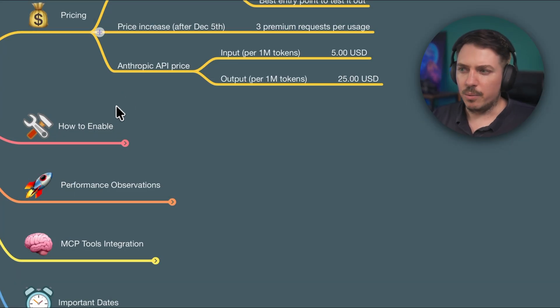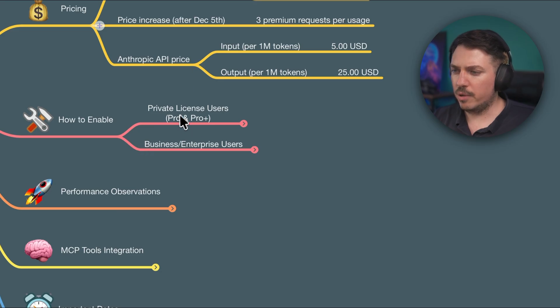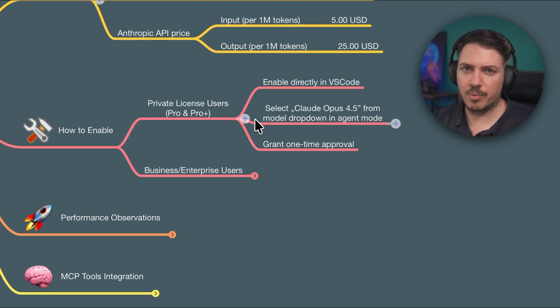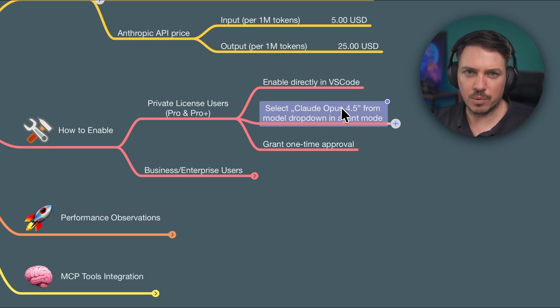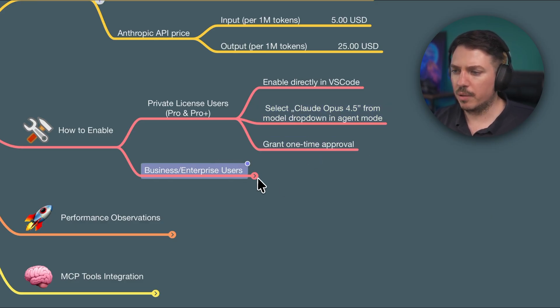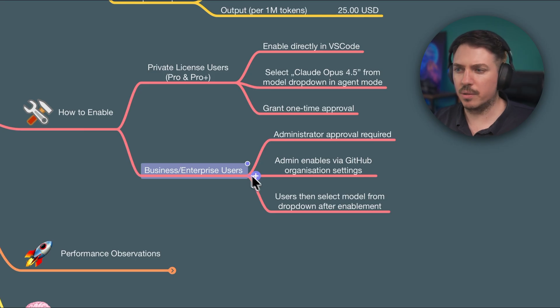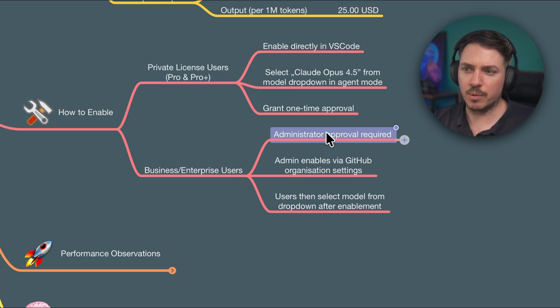Let's quickly look at how to enable this. If you are a private Cloud license user on the Pro or Pro Plus plan, you can do it directly in VS Code — just click the dropdown, select Claude Opus 4.5, and grant the one-time approval. When you are a Business or Enterprise license user, you have to ask your administrator to enable this model, and then you'll be able to pick it from the model picker in VS Code.